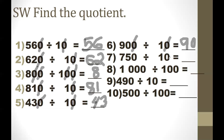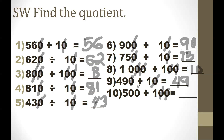Number 7: 750 divided by 10. Cancel one zero on both divisor and dividend. 75 divided by 1 equals 75. Number 8: 1,000 divided by 100. Cancel two zeros in both. 10 divided by 1 equals 10. Number 9: 490 divided by 10. Cancel one zero each. 49 divided by 1 equals 49. Number 10: 500 divided by 100. Cancel two zeros in both. 5 divided by 1 equals 5.